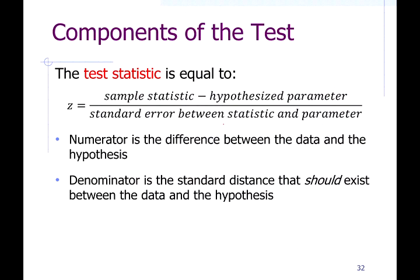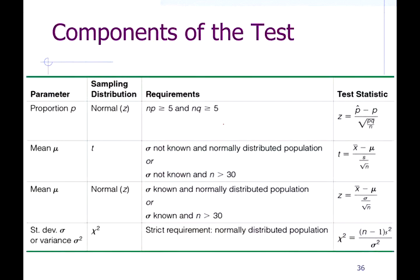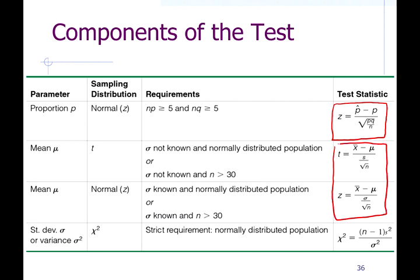Specifically, if you're testing a claim about the proportion, the test statistic is a z-score. If you're testing a claim about the mean, it's a t-value or z-score depending on whether you know the population standard deviation — just like with confidence interval estimates. If you know sigma, use the normal distribution and z-scores; if you don't know sigma, use t-values.